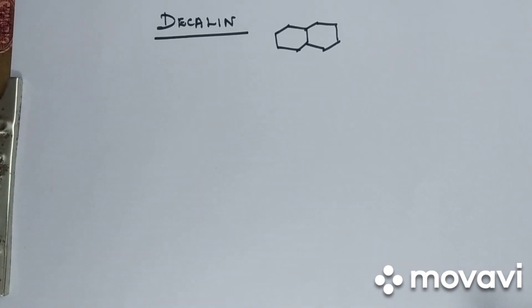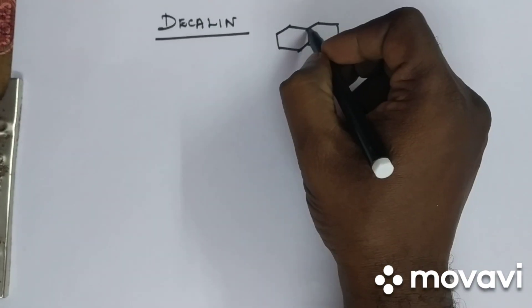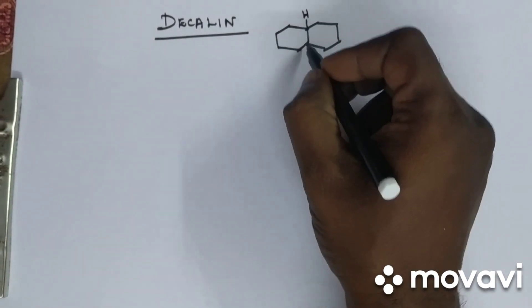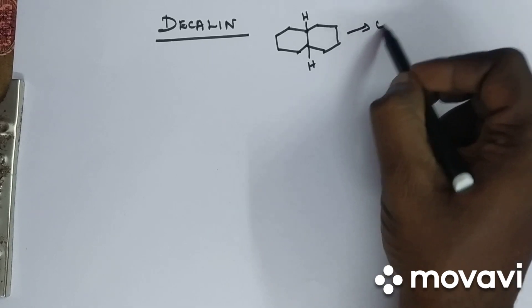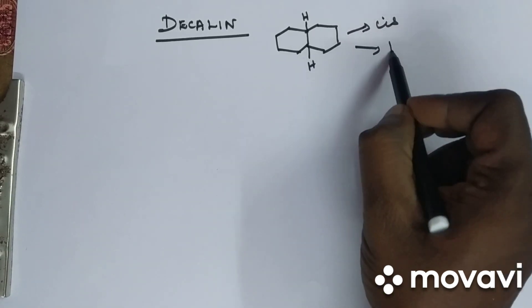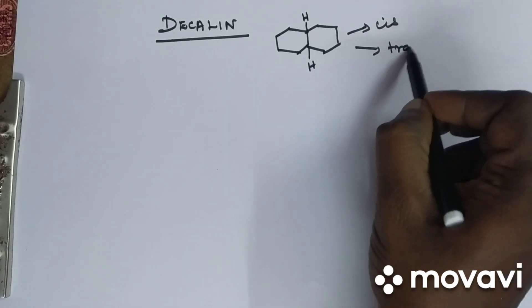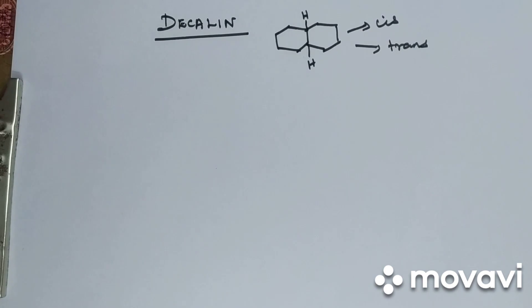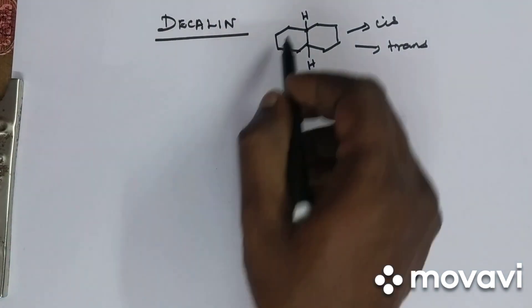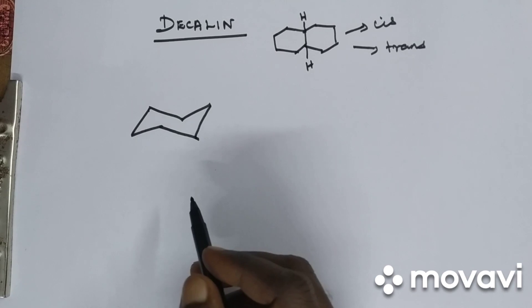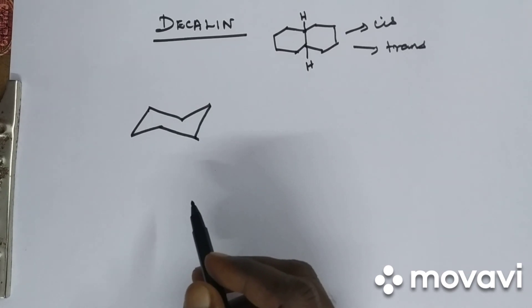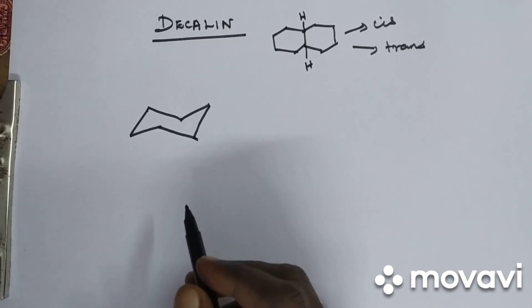Now let us see how to draw decalins. This is the structure of decalin — here is a hydrogen and here is a hydrogen at the ring junction. This can be either cis or trans. Let us draw it: draw the first cyclohexane ring. We know alpha-alpha or beta-beta is cis; if there is a change it is trans.